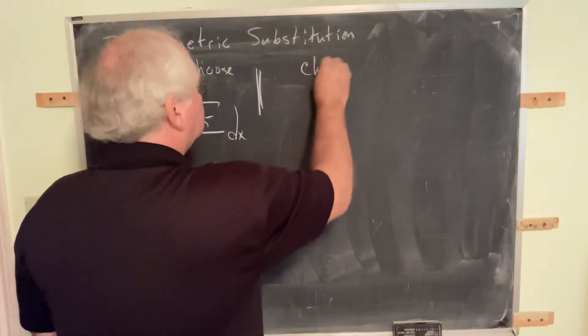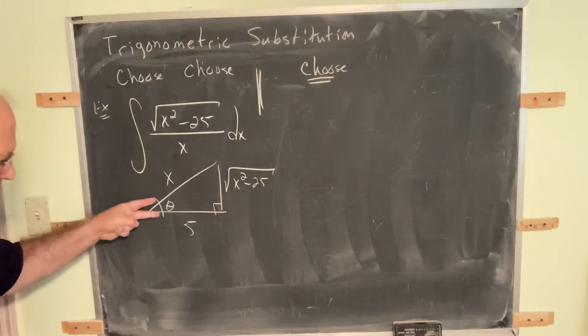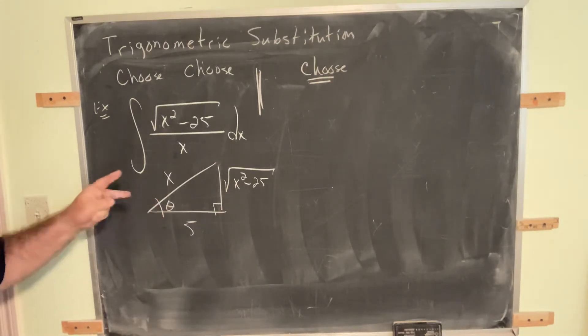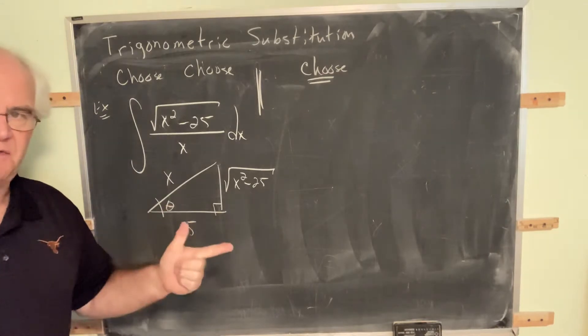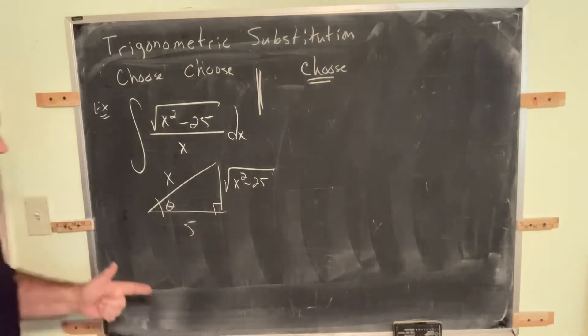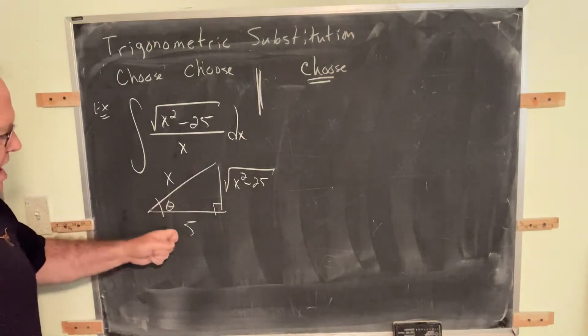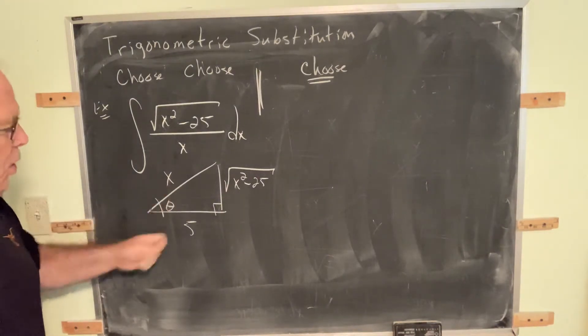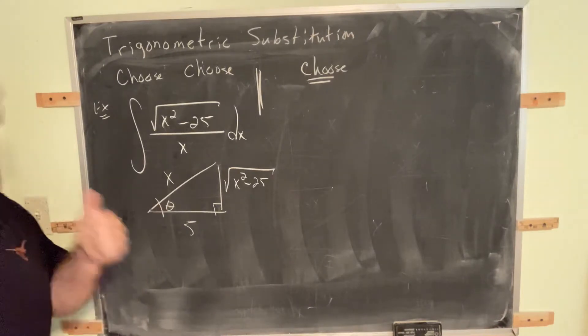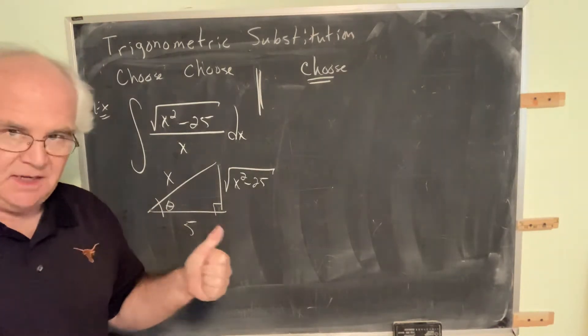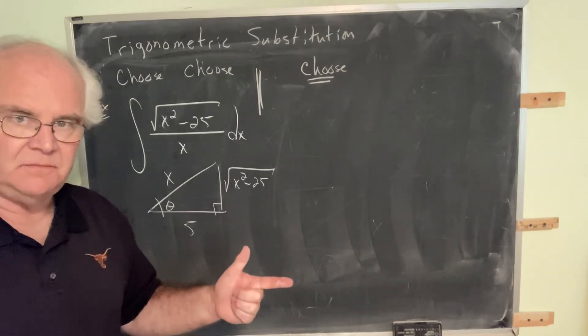And now, choose. Number one, choose. From the perspective of theta, and that's why I'm always putting theta in the lower left, from the perspective of theta, from the perspective of this angle, choose the trigonometric function that does two things. It does not involve the radical. Choose the function that does not involve the radical.